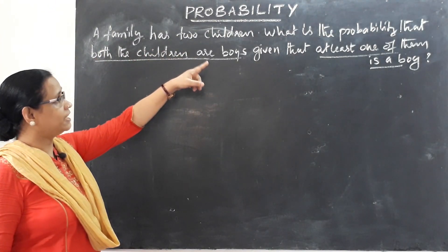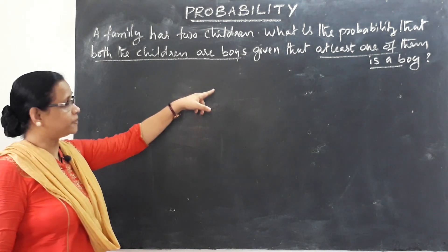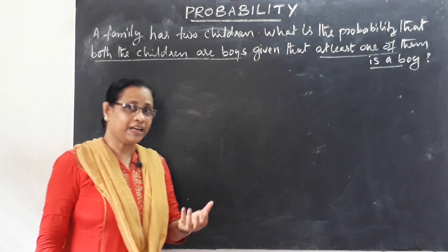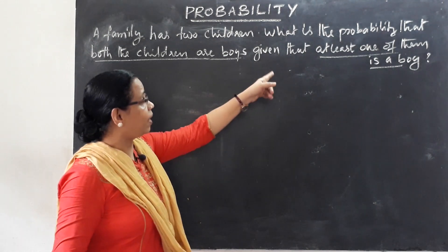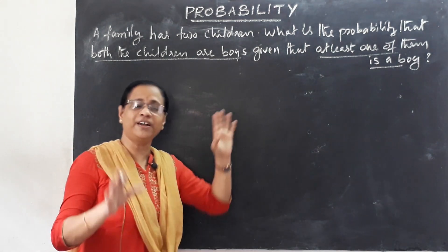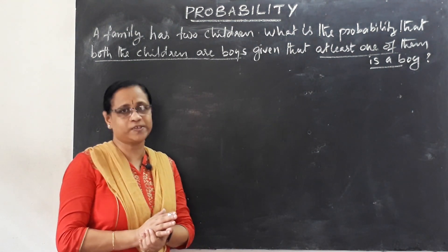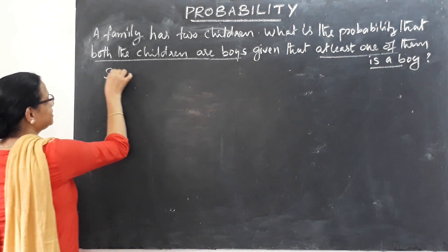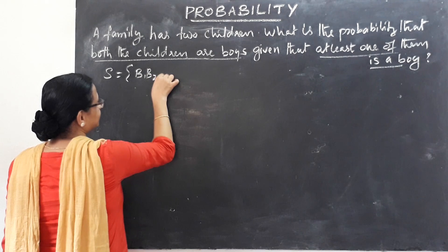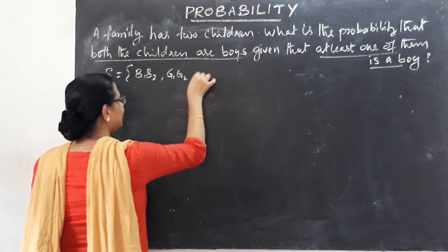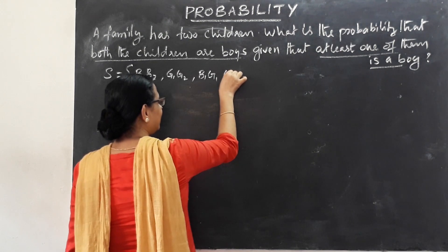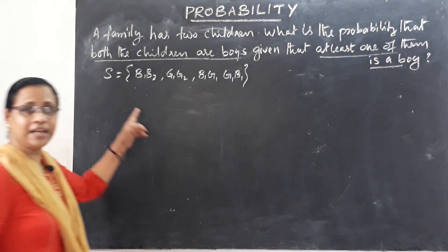Problem: A family has two children. What is the probability that both the children are boys, given that at least one of them is a boy? For two children, the sample space has four outcomes: Boy-Boy, Boy-Girl, Girl-Boy, Girl-Girl. These are the four conditions.